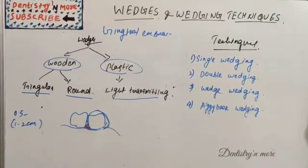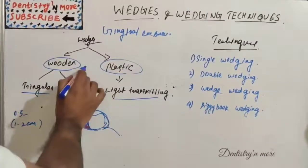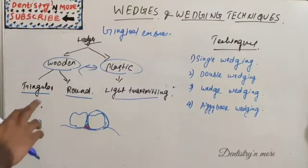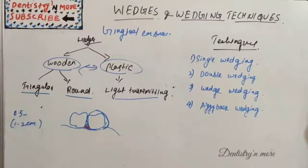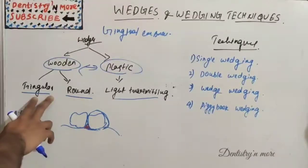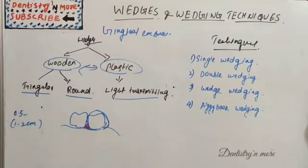So those are the two basic types of wedges: wooden wedges and plastic wedges. The next classification is triangular and round. Triangular wedges are most preferred for cavities with deep gingival margins.